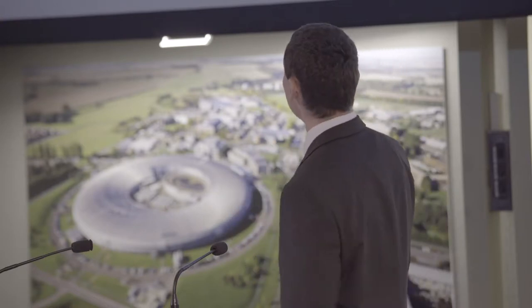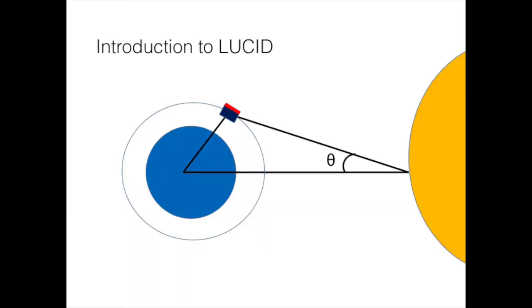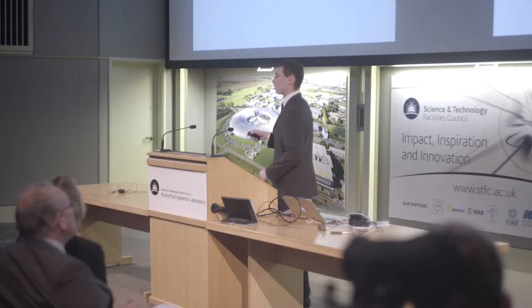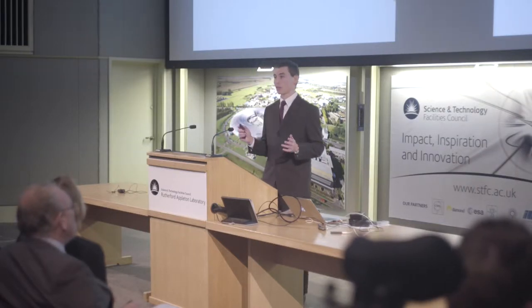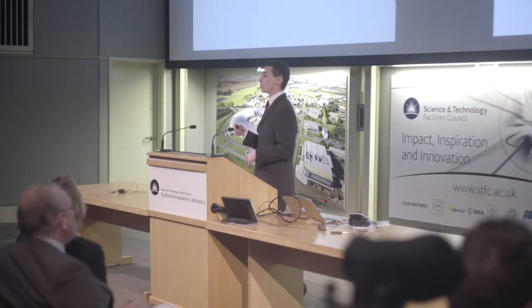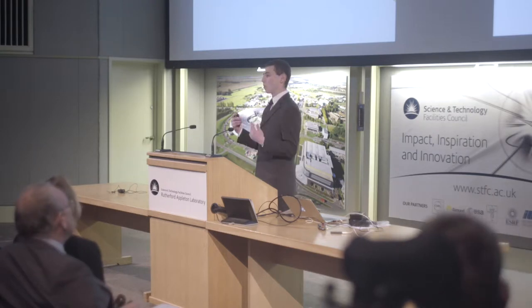Before we go into that, a little bit about LUCID. This is a model of how it works. This is the TDS-1 satellite where the LUCID payload is on. There is an open cube formation of five TimePix detectors, but for this experiment we only use chip number one.